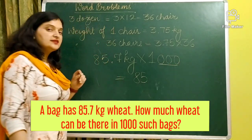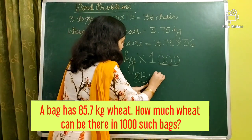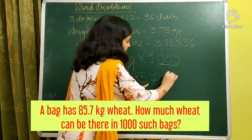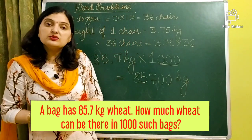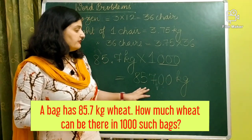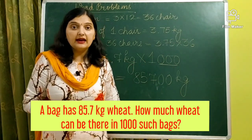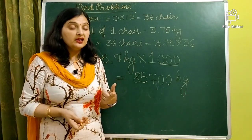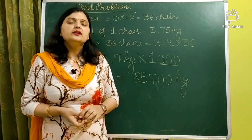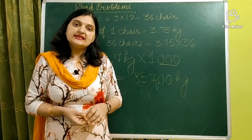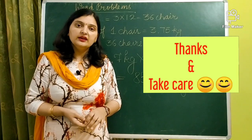In 1000 there are three zeros, so we shift the decimal three places to the right. After the decimal in 85.7 we have one digit — seven — so we need two more zeros. Our answer is 85,700 kg. That means 1000 bags will contain 85,700 kg of wheat. We solved this orally without full multiplication. This is how we can solve any type of word problem related with decimals. Solve these questions properly, make proper statements, and write them in your notebooks. Thank you and have a nice day.